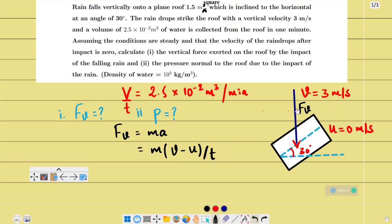Final velocity minus initial velocity divided by t. Final velocity we write as v and initial velocity as u. Mass is equal to density times volume.